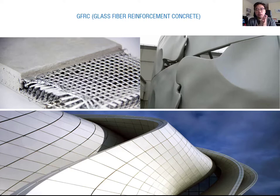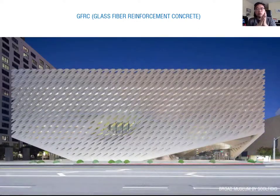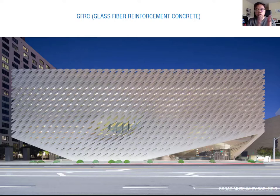Glass fiber is much lighter and much thinner, so it is available to make thin profiles and also very flexible forms. The Broad Museum uses GFRC — glass fiber reinforcement concrete — which reduces the overall building weight and enables very flexible and thin profile concrete. Its weight is only 20 percent of solid concrete. The lightweight benefit makes it easier to handle on site and reduces structural load, while also allowing lots of different forms because of the thin profile and flexible form.